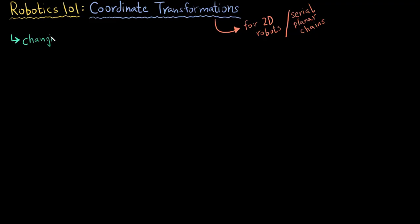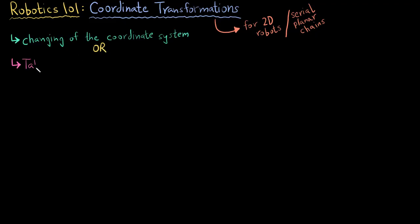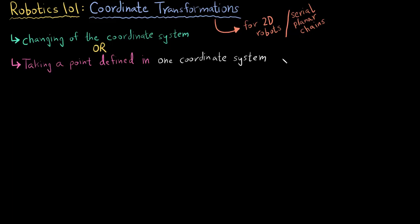Starting with the definition: coordinate transformation is the changing of the coordinate system. I personally don't like this definition, so let me define it another way. I can say that coordinate transformation is taking a point which is defined in one coordinate system and defining it with respect to another coordinate system.